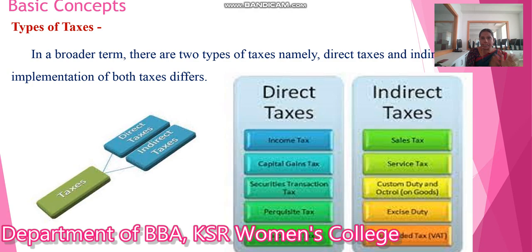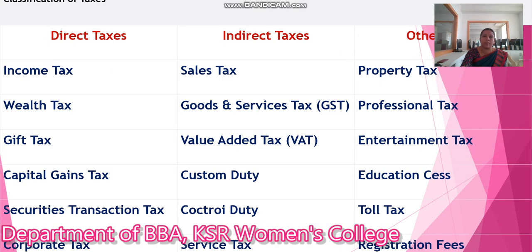These are the direct taxes, paid in direct mode. Under indirect taxes: sales tax, service tax, custom duty, excise duty, and value-added tax. These are paid in indirect mode. The third category is other taxes — these include property tax, professional tax, entertainment tax, education tax, toll tax, and registration fee. Thank you.